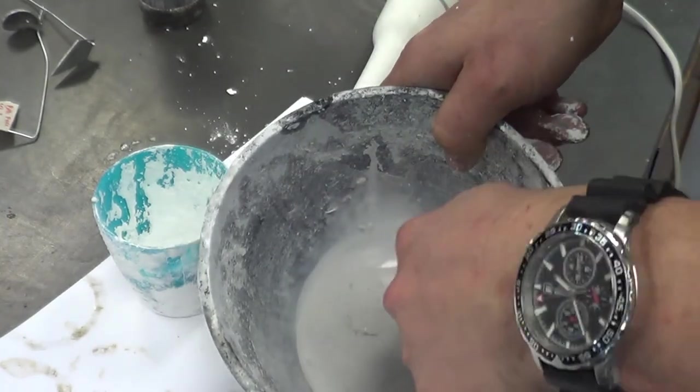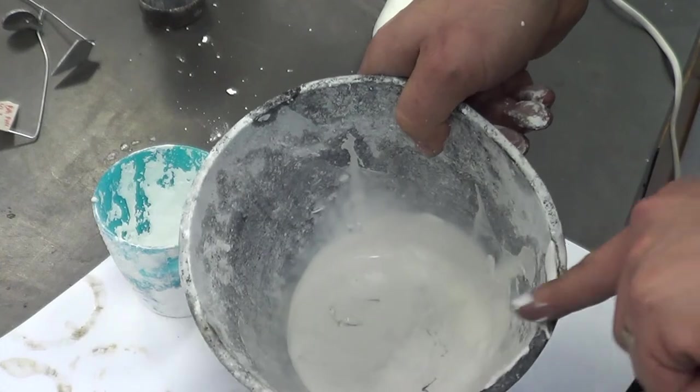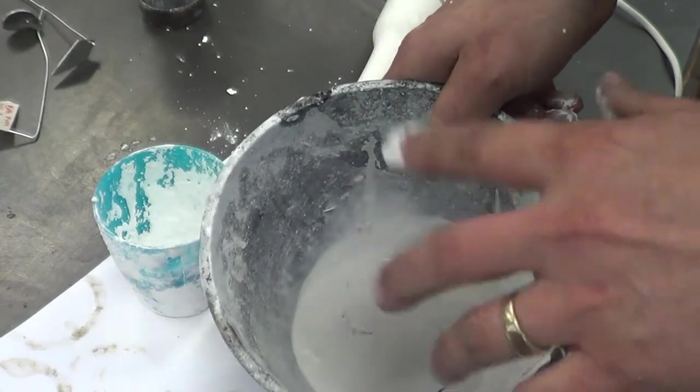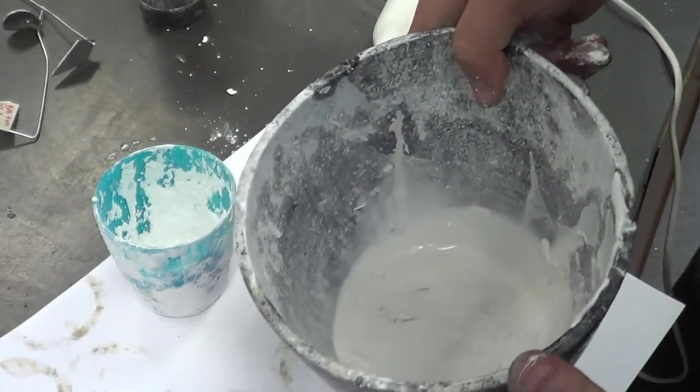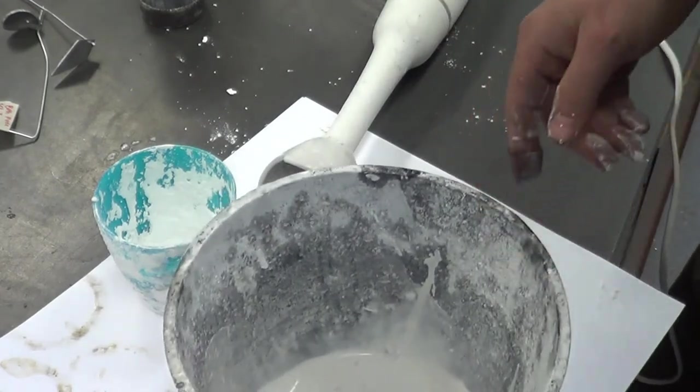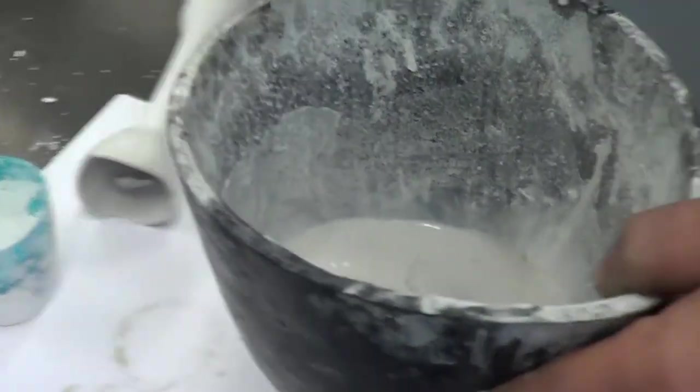Trouble is now, this plaster here is full of air bubbles. From now, I've got about seven minutes that I've got to do this with before it's set. We've got to get rid of those air bubbles and there's a special machine which I'll show you to do that.